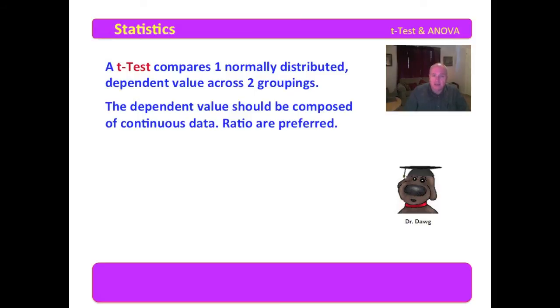The dependent value should be composed of continuous data. Now, continuous data, ratio preferred, sometimes they will compare interval data across a t-test, which for some people is acceptable. I prefer that we compare ratio data.